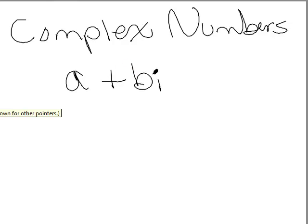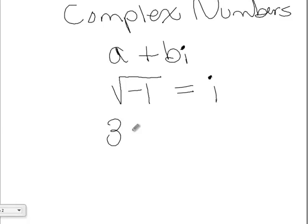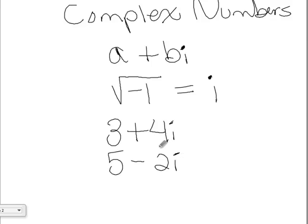We need to define what i is. In the past, we haven't been able to do the square root of a negative number. But now we are going to define the square root of negative 1 as the number i. So that i in A plus Bi is the square root of negative 1. A complex number might look like 3 plus 4i, or it might look like 5 minus 2i.